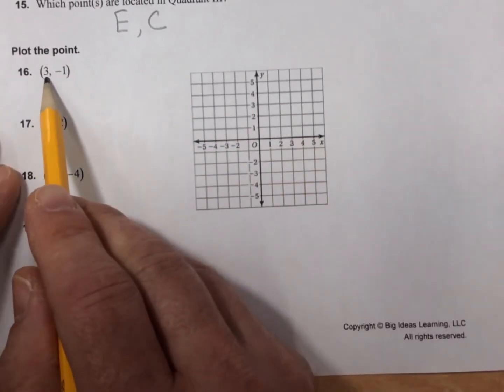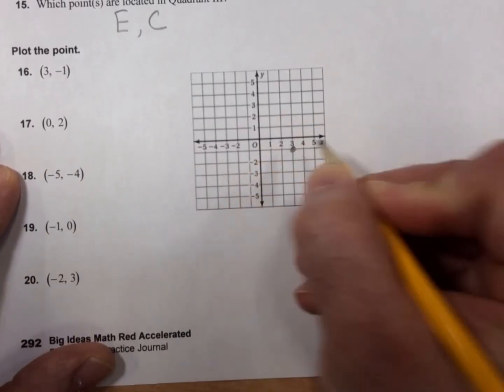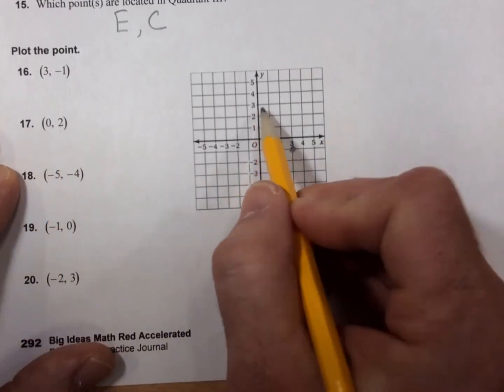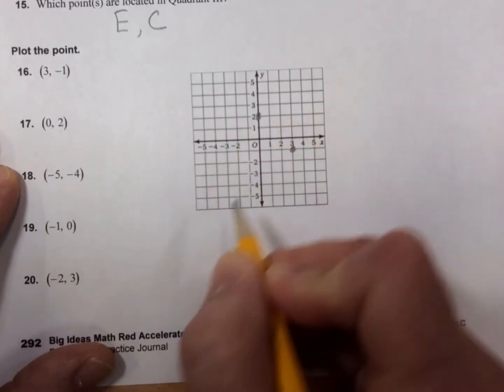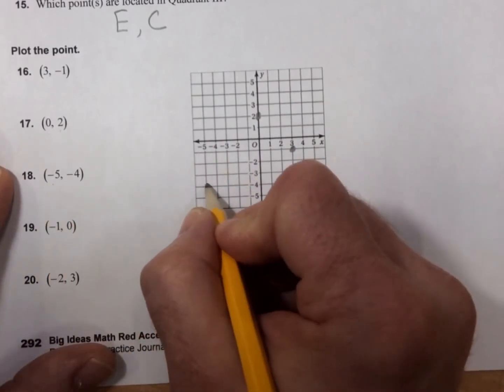Plot the point. (3, -1). 1, 2, 3. -1. Right there. (0, 2). So, 0, 2. It would be right up here on the y-axis. (-5, -4). -5, -4. It goes right down here.